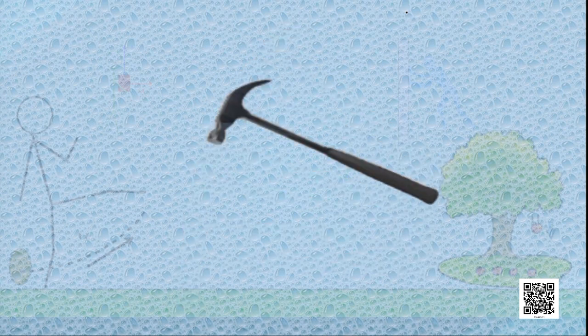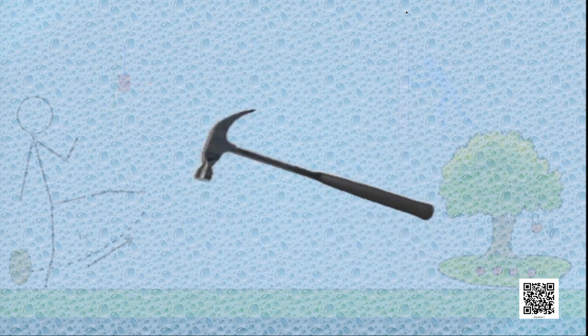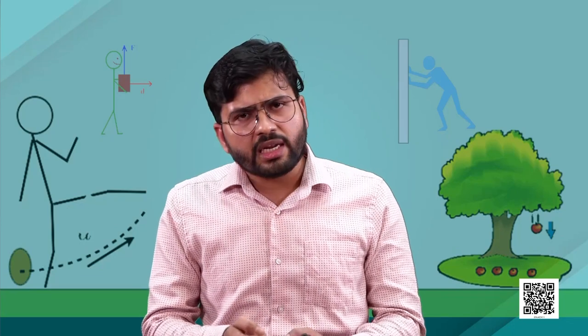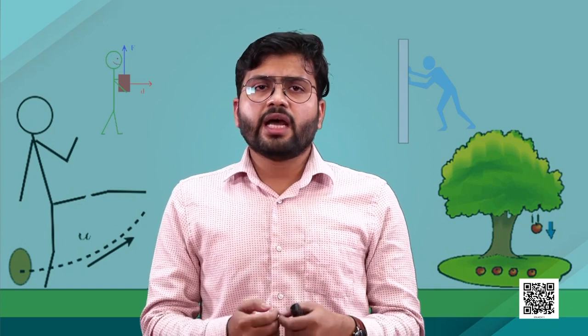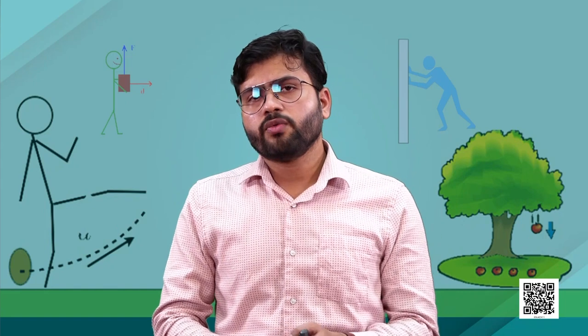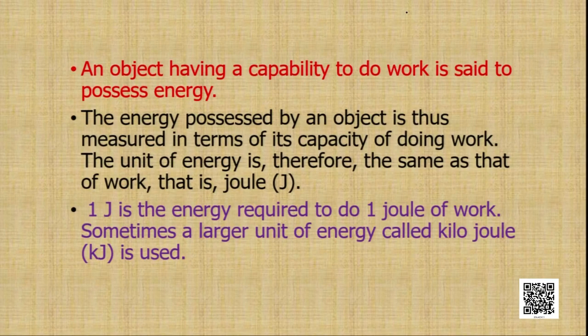Think of another situation. If you raise a hammer to a certain height and allow it to hit a glass, the glass will break into pieces. When we lift the hammer, we are doing some kind of work on it. Because of that work, the hammer gains some energy, and after acquiring that energy, it does work on the glass — that's why the glass breaks. This clearly shows how energy is related to work. An object having the capacity to do work is said to possess energy.